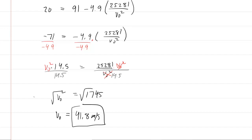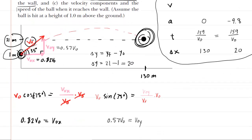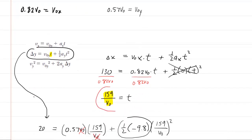Moving to Part B, which asks for the time it takes the ball to reach the wall. This is straightforward because we already have the expression for time. Taking 159 and dividing by the initial speed we just found — 41.8 meters per second — gives a time of approximately 3.8 seconds. This is the correct answer to Part B.